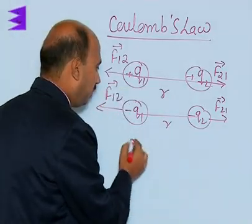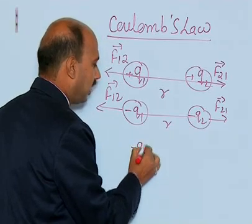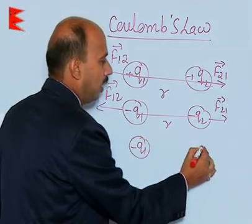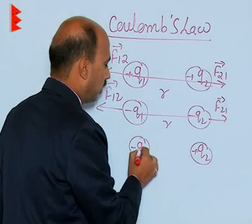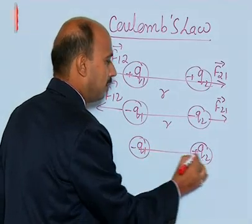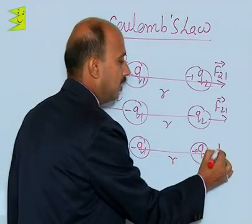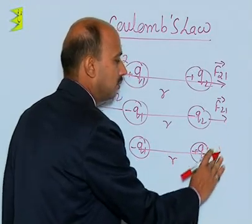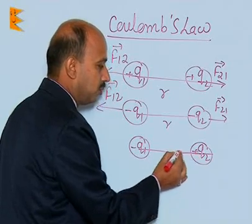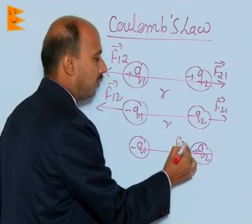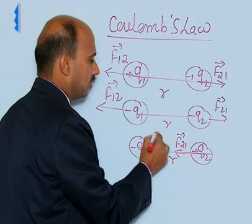Suppose you have taken one negative charge Q1 and one positive charge Q2. Both are point charges separated by distance R. Here the force F21 is acting — this is negative, this is positive — so this is being attracted to this side. So F21 acts to this side and F12 to this side.